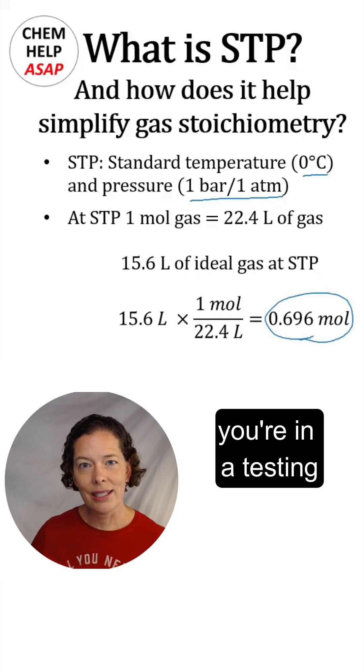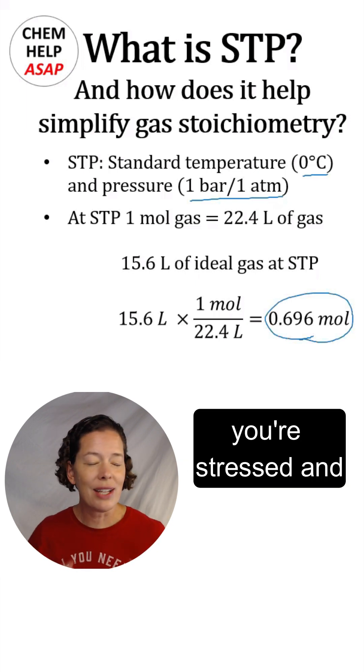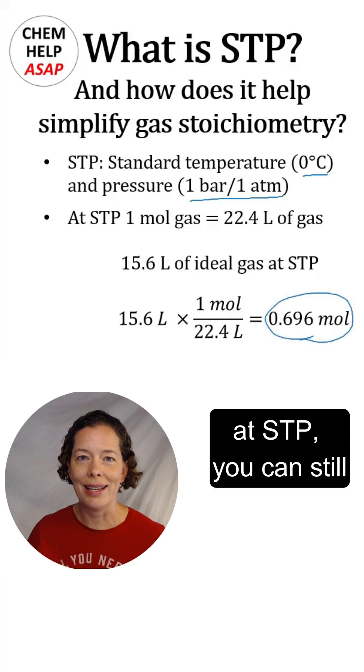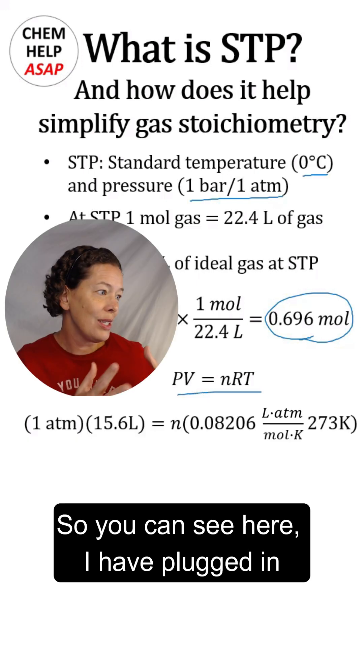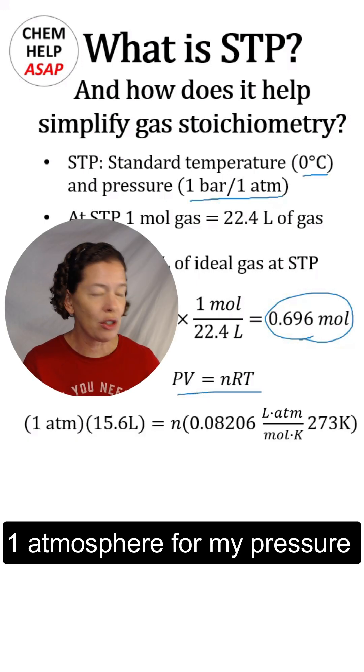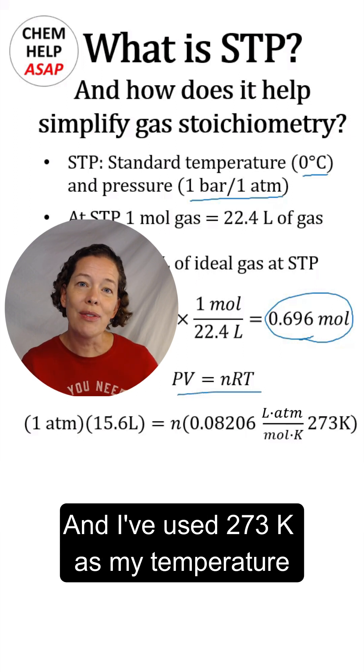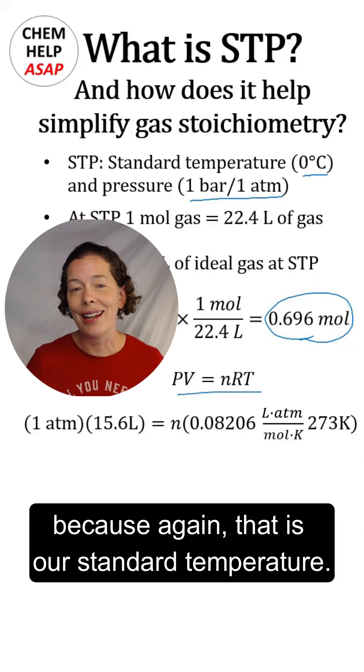Now let's say you're in a testing situation and you're stressed and you just forgot that you have 22.4 liters per mole at STP. You can still plug into the ideal gas law. You can see here I have plugged in one atmosphere for my pressure because that is our standard pressure, and I've used 273K as my temperature because that is our